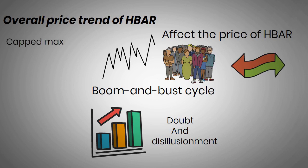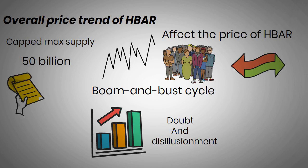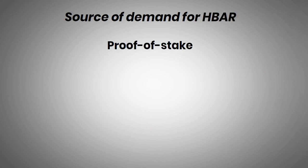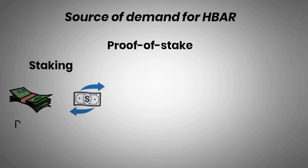HBAR has a capped max supply of 50 billion, making it a scarce asset like Bitcoin. Hedera's gradual distribution schedule, which will see only about a third of the max supply unlocked by 2025, should prevent the HBAR market from becoming overly diluted. If demand for the token grows faster than the supply, its price will rise. One source of demand for HBAR will be for securing the proof-of-stake network, as staking and proxy staking HBAR means earning a share of transaction fees, incentivizing more people to buy and stake HBAR.